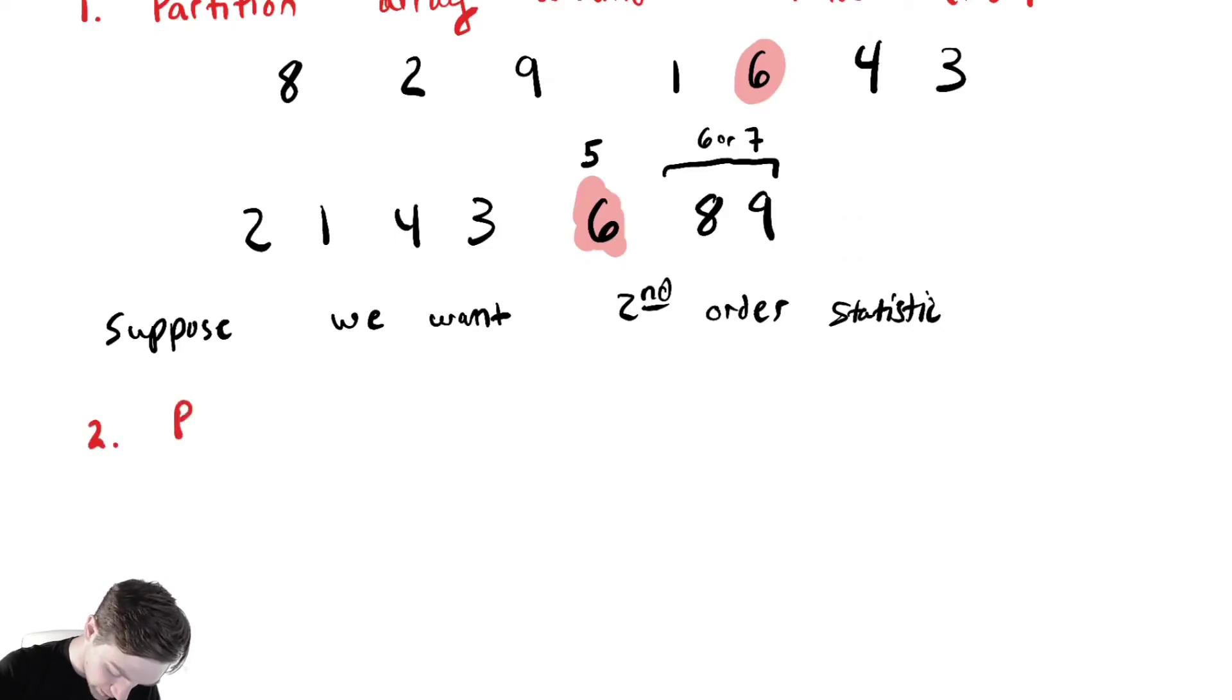Then we partition one of the sides. And we know which side that will be based on the location of the element we partitioned around.